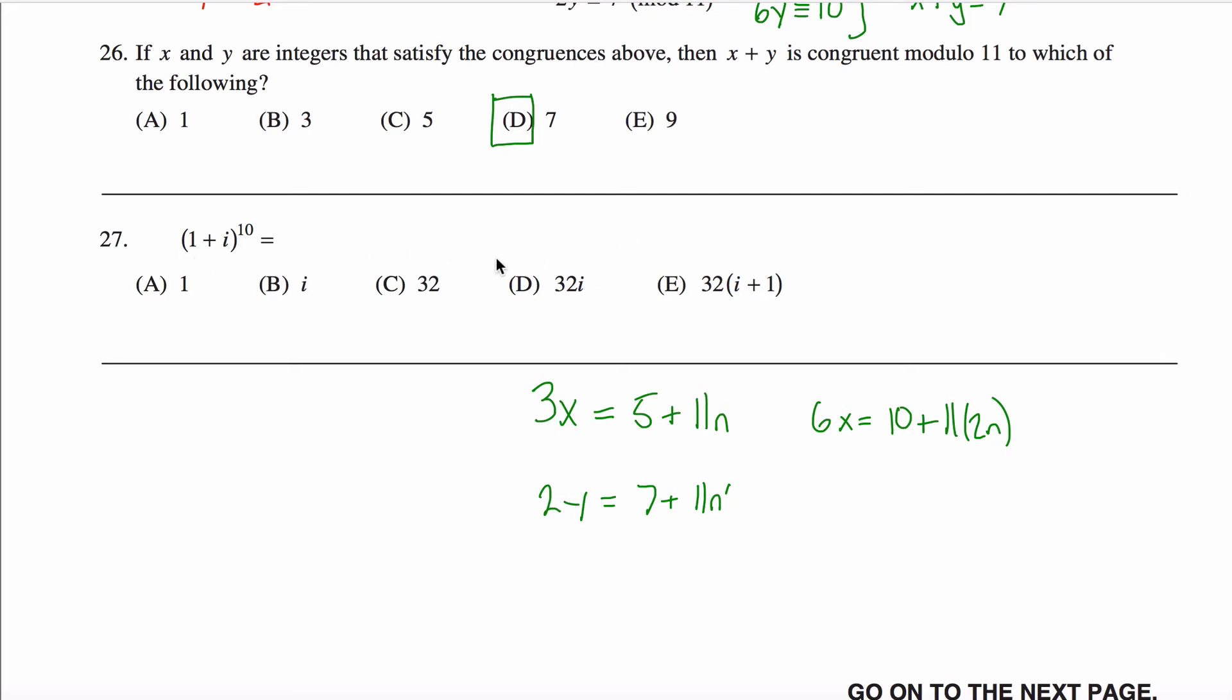All right, problem 27, a couple different ways you could figure this guy out. The quickest way I think is to think about the geometric interpretation of multiplying complex numbers.